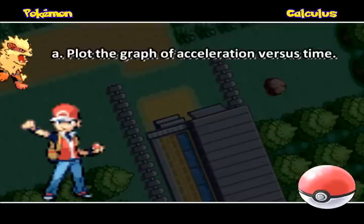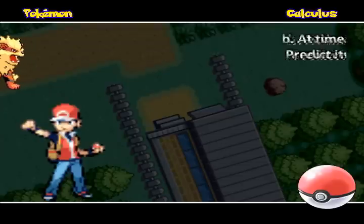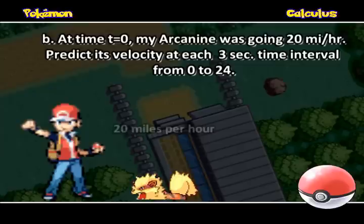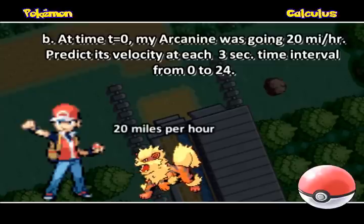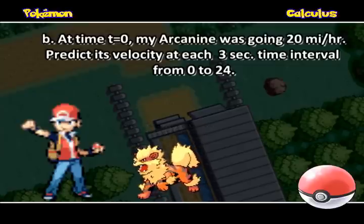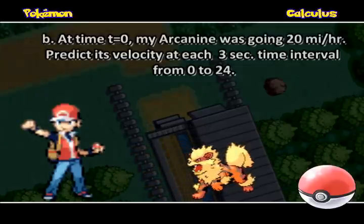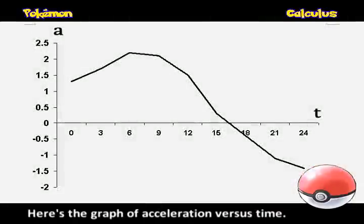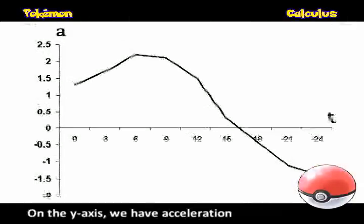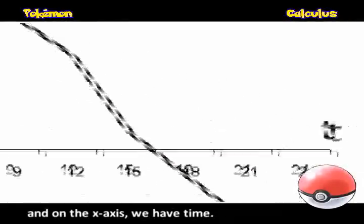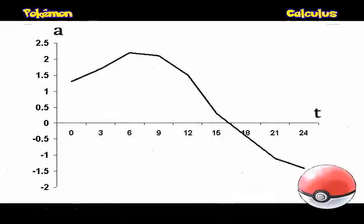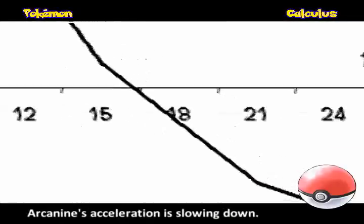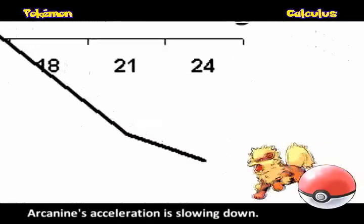Part A: Graph the acceleration versus time. Part B: At time T equals 0, my Arcanine was going 20 miles an hour — predict its velocity at each 3-second time interval from 0 through 24. Here's the graph of acceleration versus time. On the y-axis we have acceleration and on the x-axis we have time. When the line is beneath the x-axis, we know that Arcanine's acceleration is slowing down.